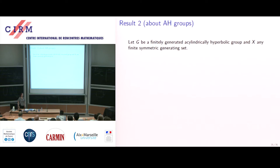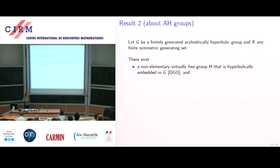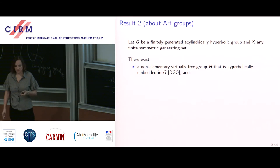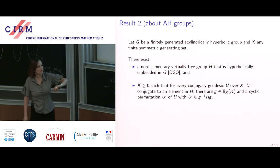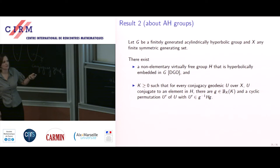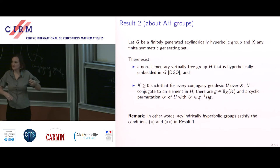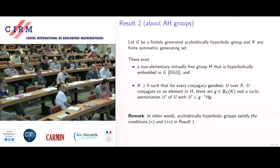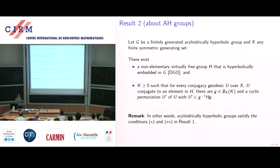The second result: in an acylindrical hyperbolic group G with generating set X, there exists a virtually free hyperbolic subgroup that is hyperbolically embedded in G — given by Dahmani–Guirardel–Osin's memoir — and the bounded conjugacy condition (★★) holds. This means acylindrical hyperbolic groups satisfy all hypotheses, so we get non-regularity and non-UCF for any language of conjugacy representatives.